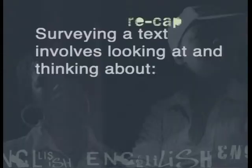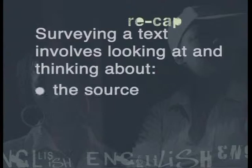To practice our active reading skills, let's take a look at the page of a Sunday Times. We'll begin by surveying the article. Do you remember what we need to look out for? Surveying a text involves looking at and thinking about: the source, the title, pictures, captions, bold type, graphs and charts, and topic sentences.